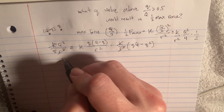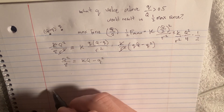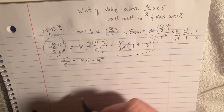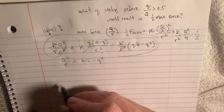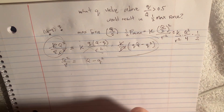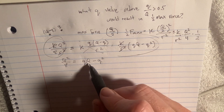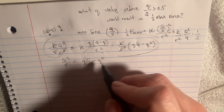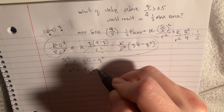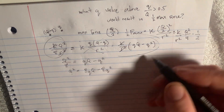After canceling, we get Q² over 8 equals q times (Q minus q). Note: that variable is a small q, not a K. Multiplying both sides out gives Q² equals 8qQ minus 8q². We can then set up the quadratic equation.